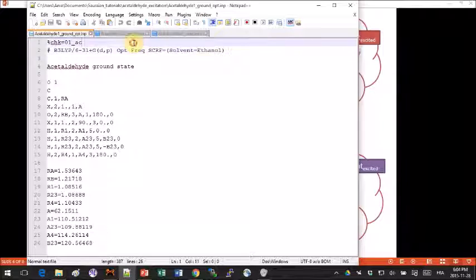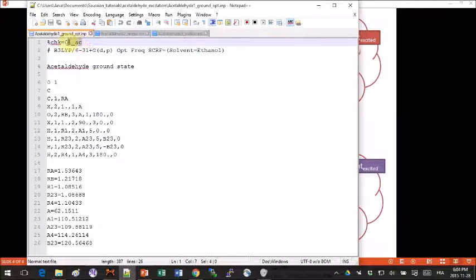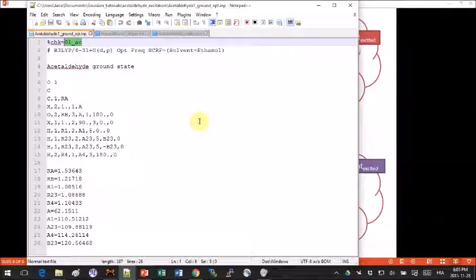I want to pay attention to the first line here where you ask Gaussian to create a checkpoint file with this specific name. This is an important feature to add to your calculation because we will use this file as input for other steps of our calculation.